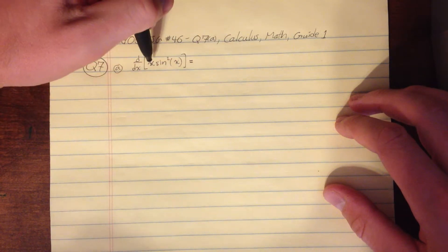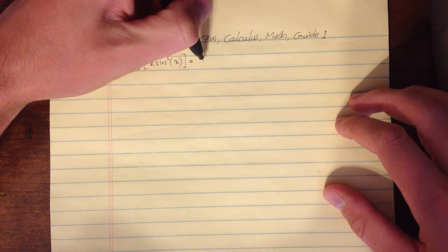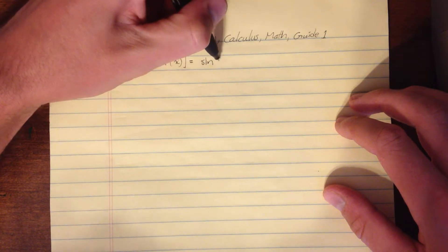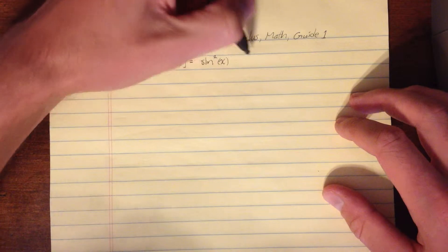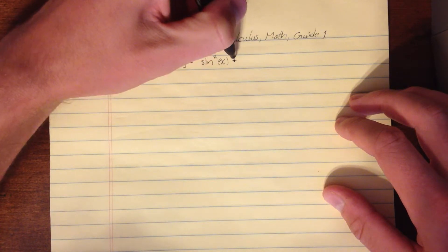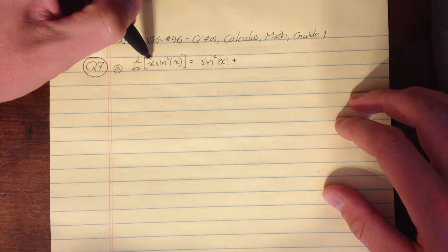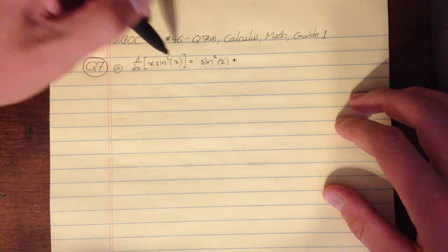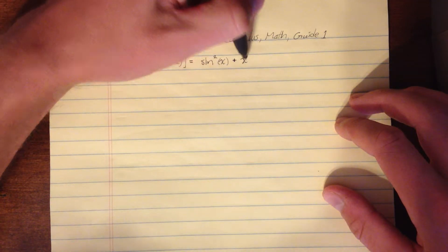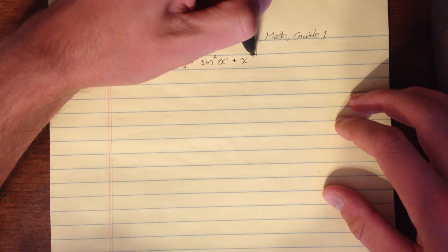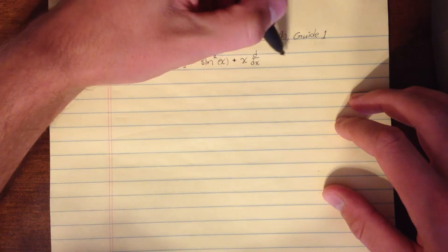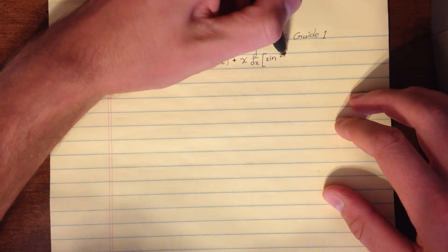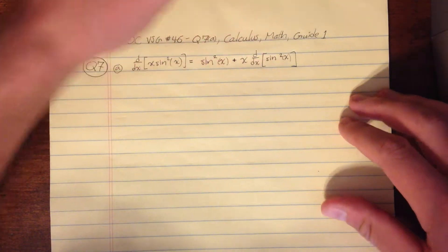So we're going to have the derivative of the first times the second. So that will just be, the derivative of this is just one, so sine squared of X, plus the first times the derivative of the second. So this will be X and then d/dx sine squared of X.